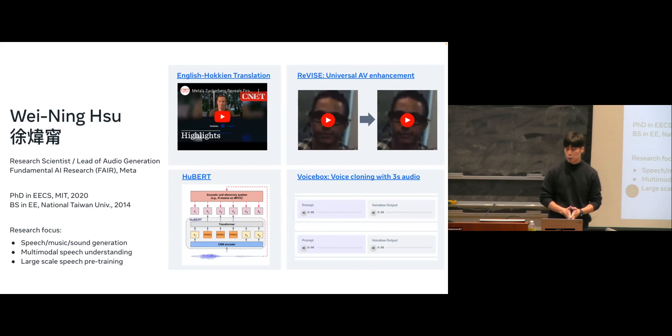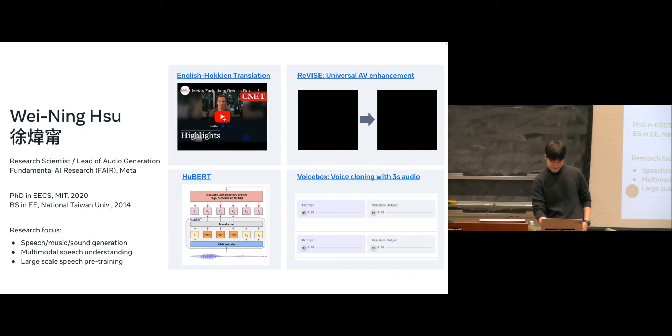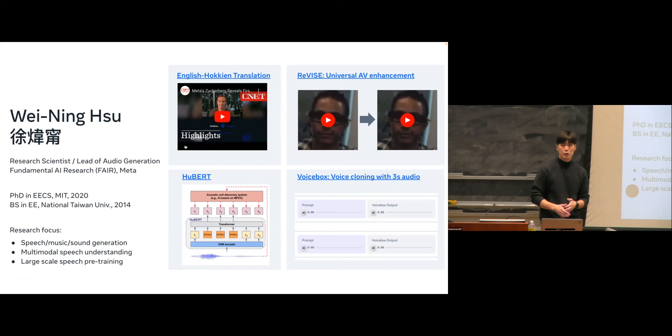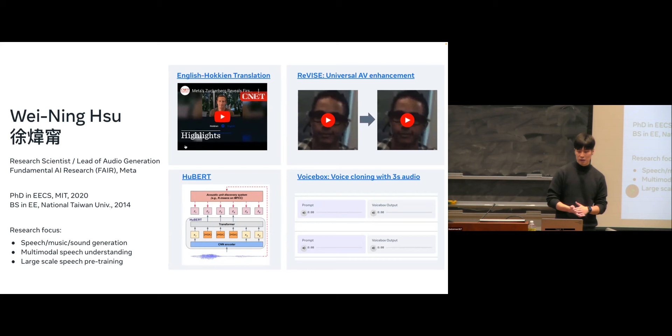Here are some highlights from past work. One is English to Hokkien translation — Hokkien is a mostly spoken language, also called Taiwanese. We used HuBERT units to replace the writing system and turn the speech-to-unit model. We also have audiovisual speech enhancement work where we leveraged a pre-trained model fine-tuned on real data, which is very small — just 2.2 hours.